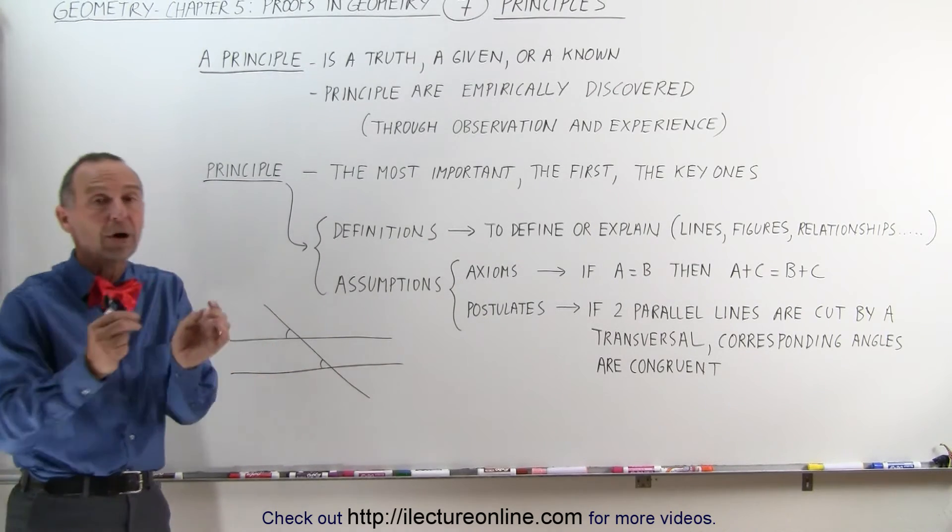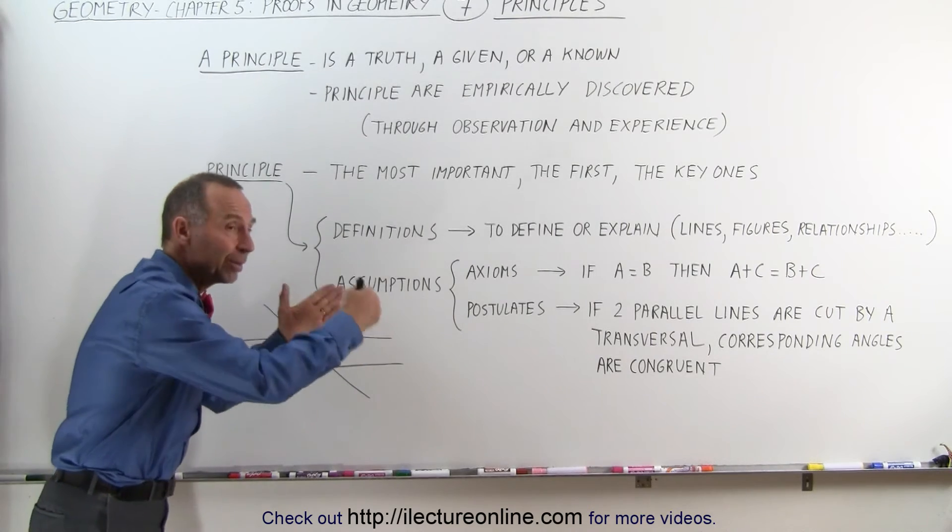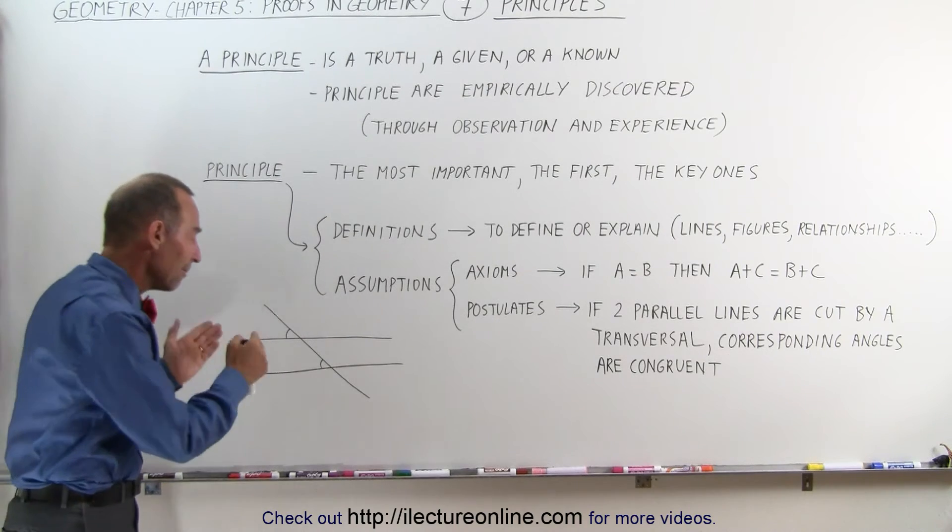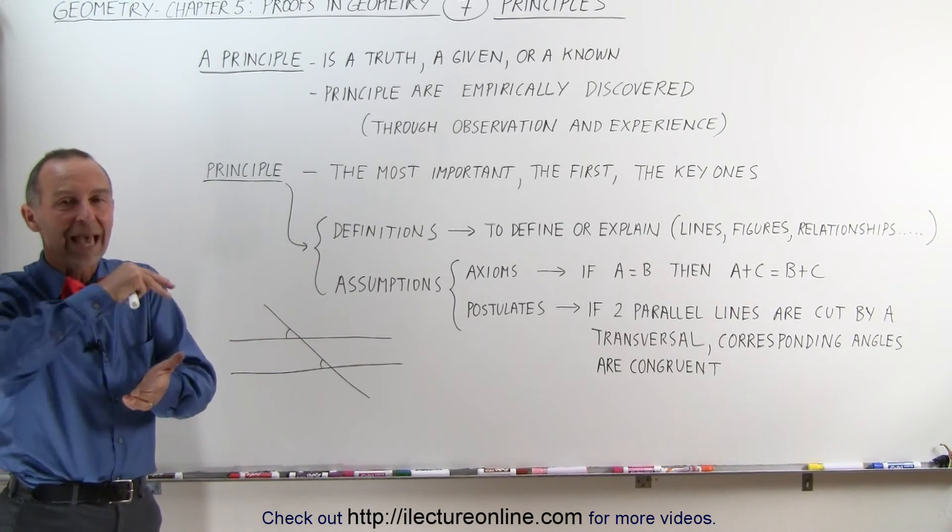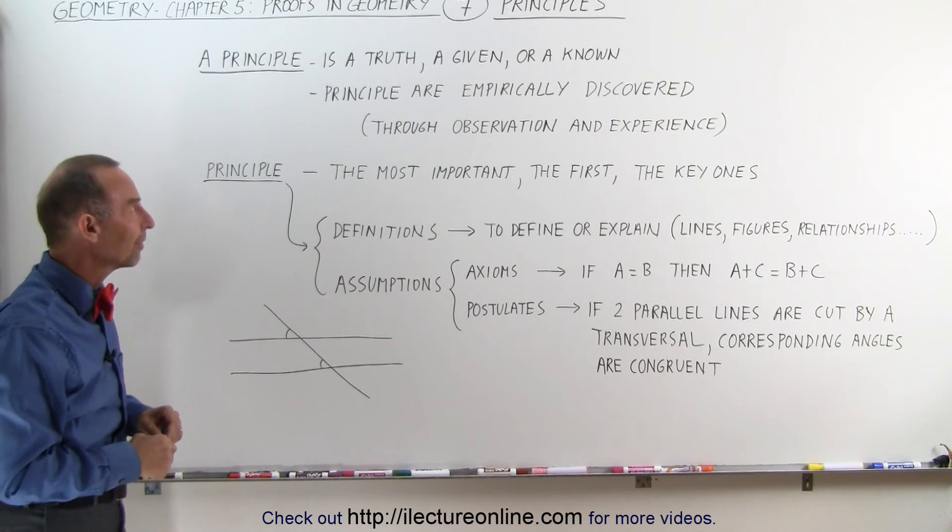to make that statement as part of a proof, we have to say that based on this particular postulate, we have to be able to name it, we have to say it's this postulate, we can make that statement. Once we can make that statement, we can then use that statement as part of a series of statements to make a proof. Again, we'll see lots of examples of that.